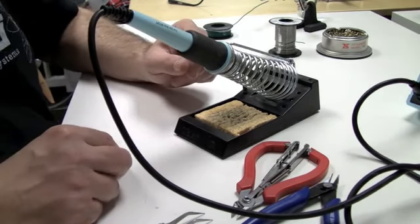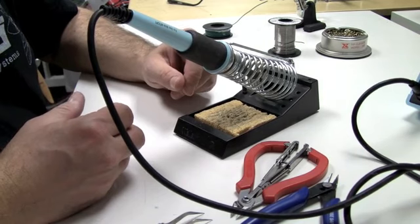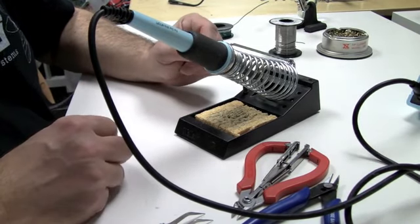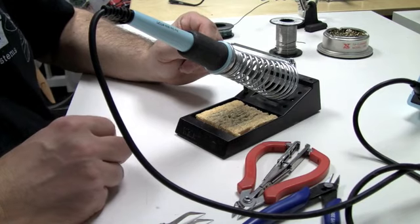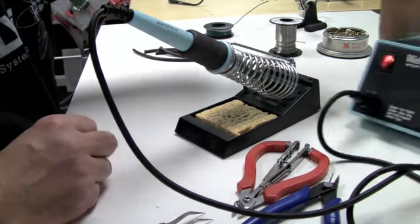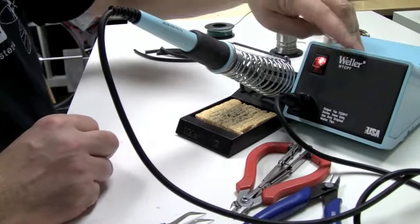When you're soldering very large gauge wire and bullet connectors and the kinds of things that you're going to be soldering when you build your quadcopter, you're going to need a lot of power. So I suggest that you get a good soldering iron.